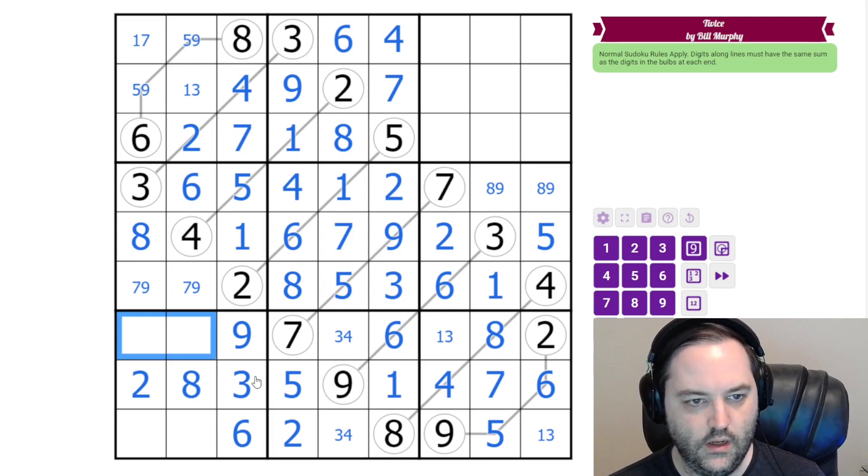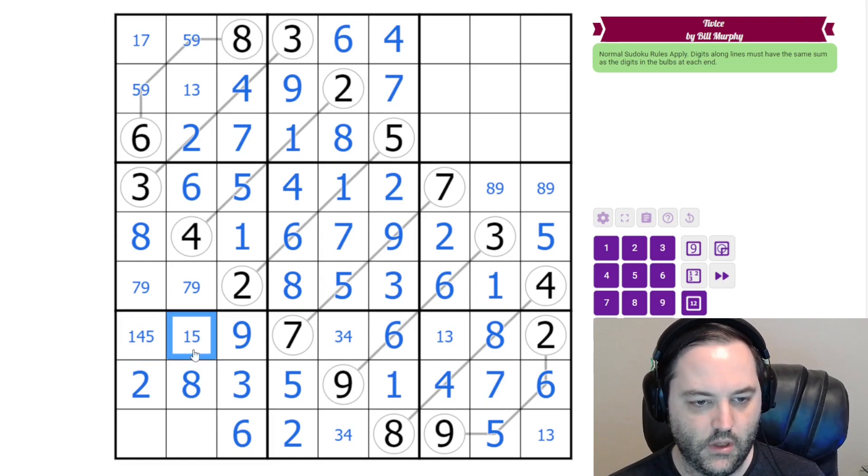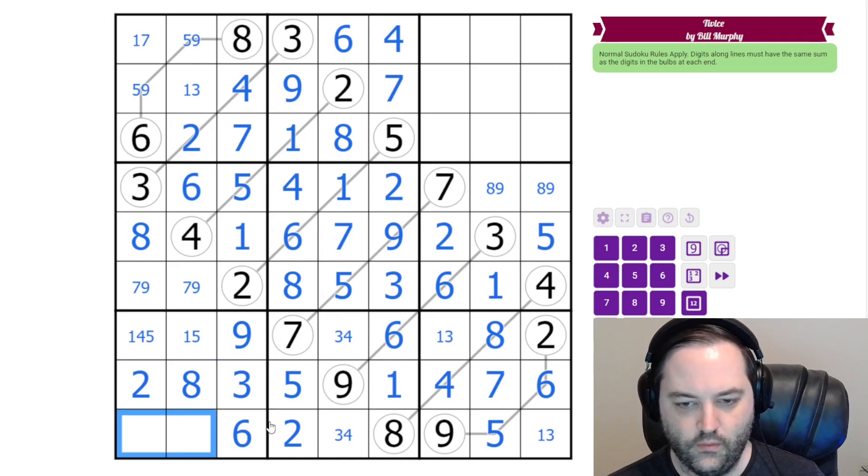These are one, three, four, and five. We can remove the three and the four. Three in the box as well. And these are one, four, five, seven, but not five because of this five. So these are one, four, and seven. This one's not four.